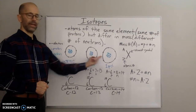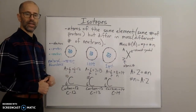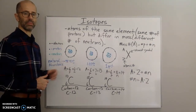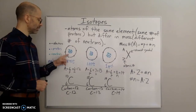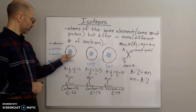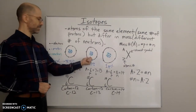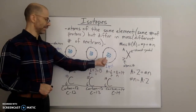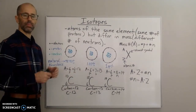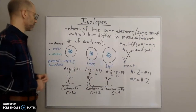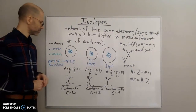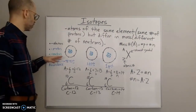They all have six blue dots, because carbon has six protons. However, they differ in the number of neutrons, shown in green. This one has six neutrons, this one has seven neutrons, and this one has eight neutrons. So all three are the same element but differ in their mass — these are three isotopes of carbon.